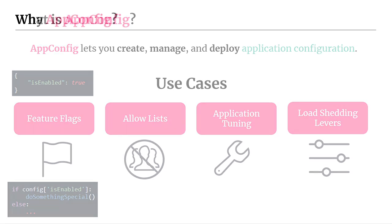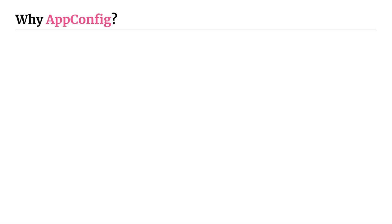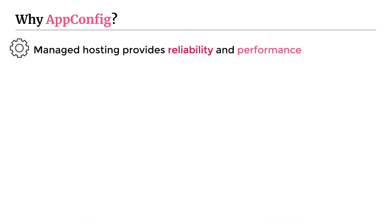Now let's talk about why you should consider using AppConfig. First, it's a managed hosting service that provides reliability and performance — no servers to think about or operate. AppConfig operates on top of AWS's global infrastructure with multiple availability zones, replicating your data across AZs so it's durable and reliably present. It also offers high performance so you can consistently retrieve configuration at scale, even with many thousands of hosts all requesting configuration simultaneously.